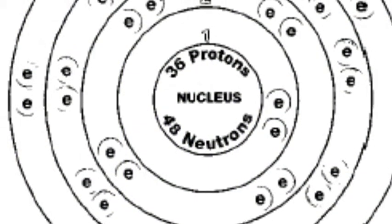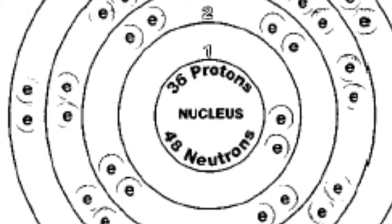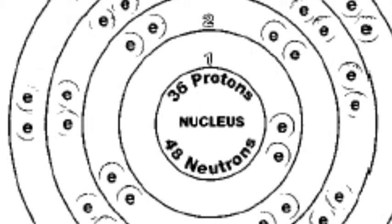Its atomic number is 36. It has 36 protons, 36 electrons, and 48 neutrons. Now let's go on to the more interesting statistics.